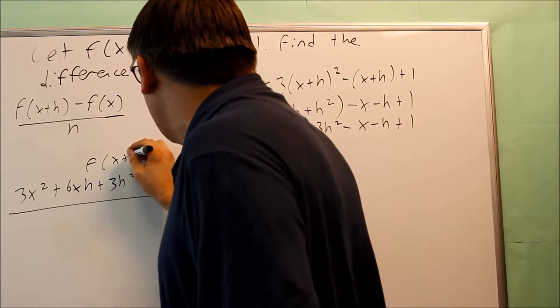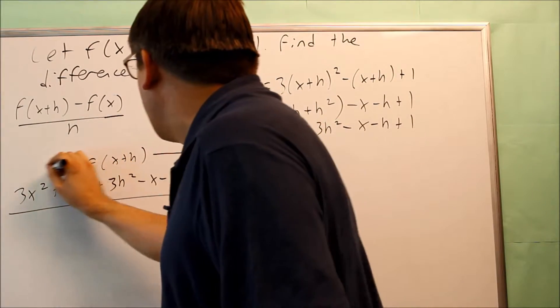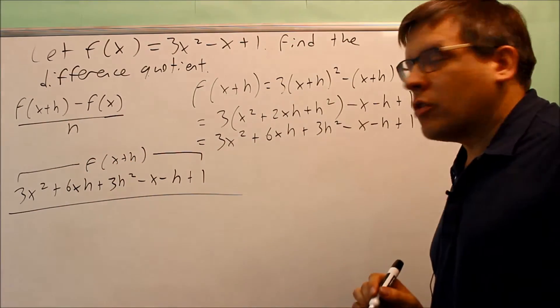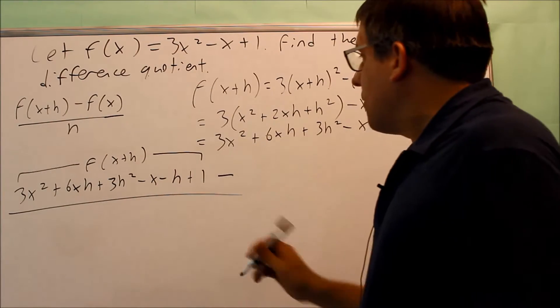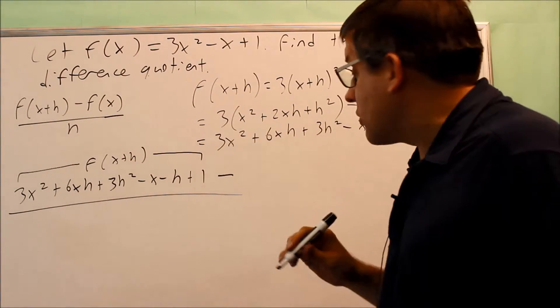This whole thing is f of x plus h, that whole entire quantity. I put a minus sign, minus sign is part of your formula. Then I have f of x.